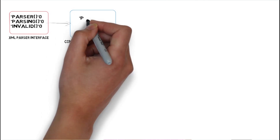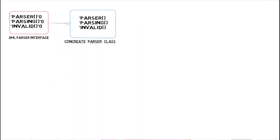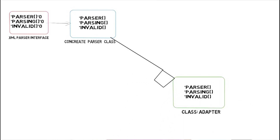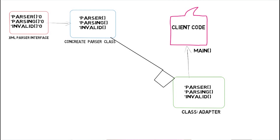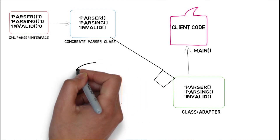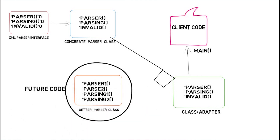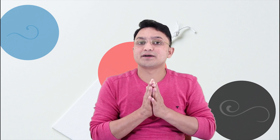What exactly we need to do is create one interface and one concrete class. This concrete class gets called from my adapter class, and the adapter class gets called in the client code. So whatever changes are done in the parsing class, or if this class is replaced with a better parsing class, my adapter class will adopt the new or better parse class. That is how it solves the incompatibility problem.